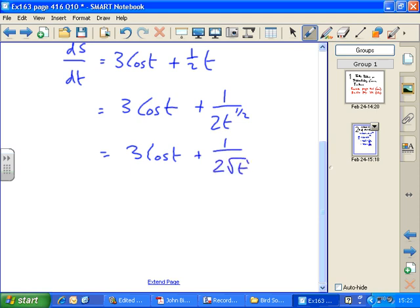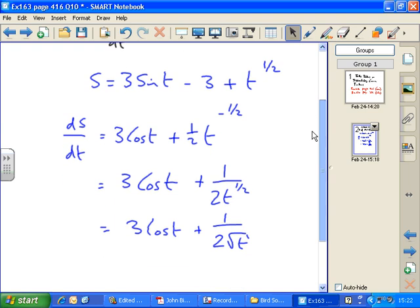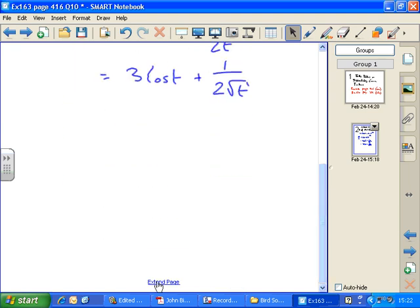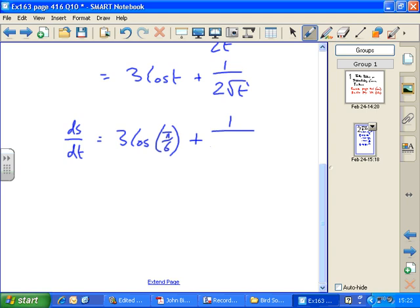So now I have to evaluate, work out what ds/dt is when t equals pi over 6. Check your calculator is measuring in radians. So ds/dt is going to equal 3 cos of pi over 6 plus 1 over 2 times the square root of pi over 6.